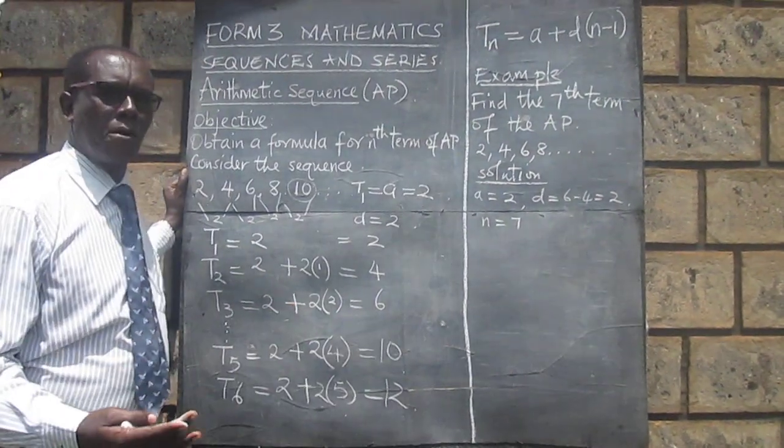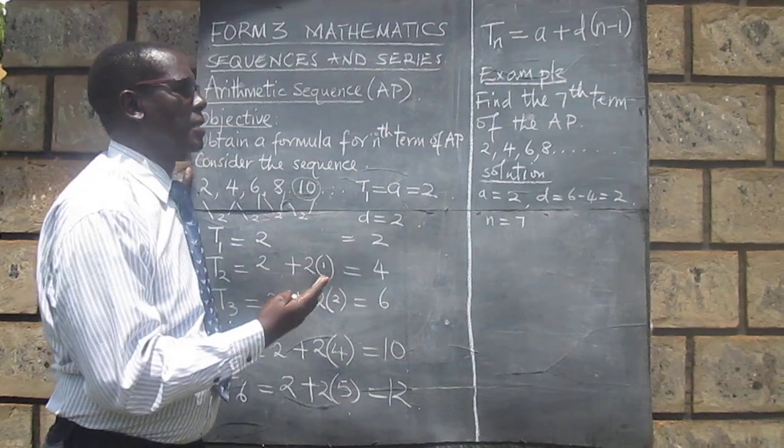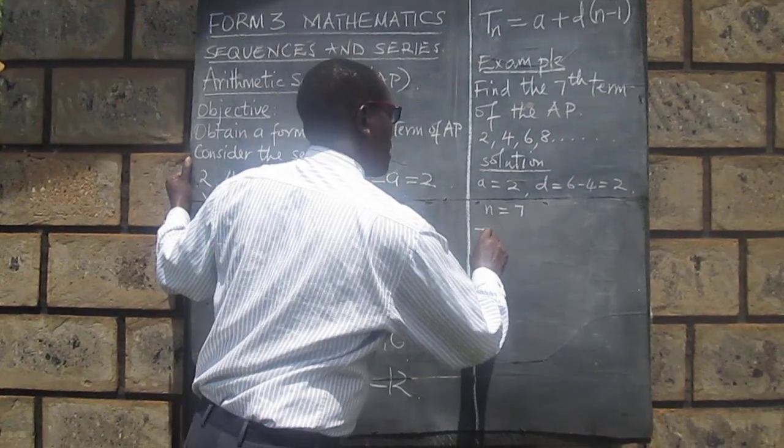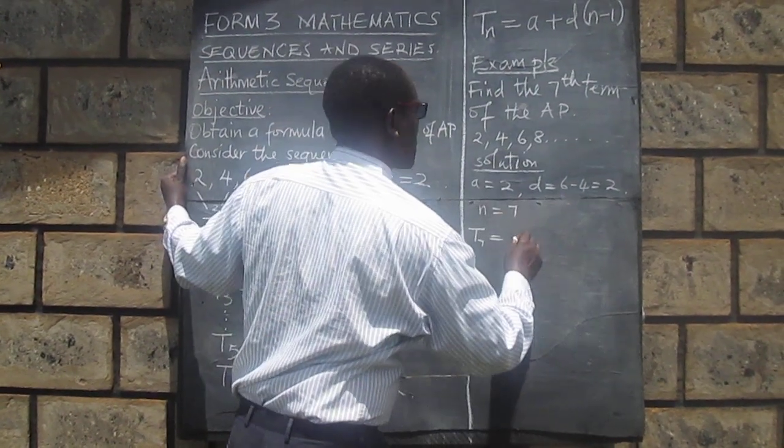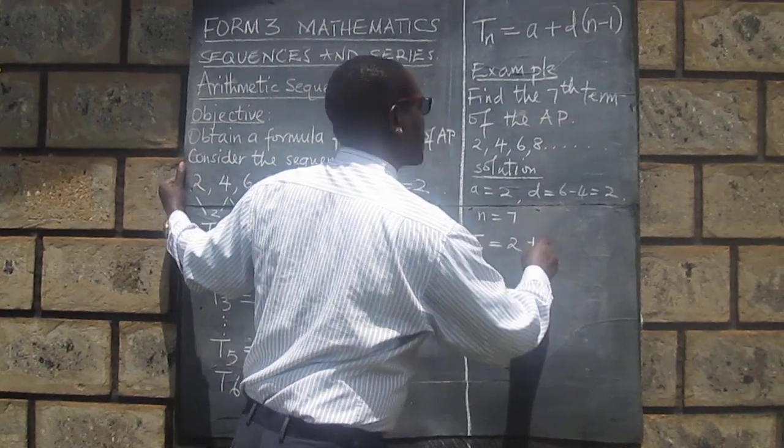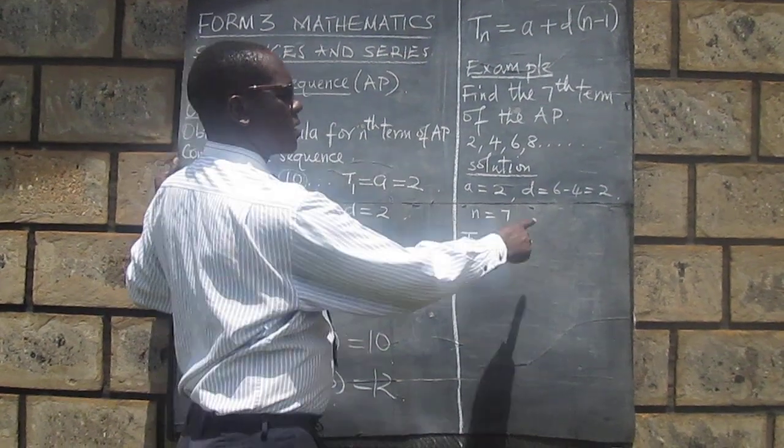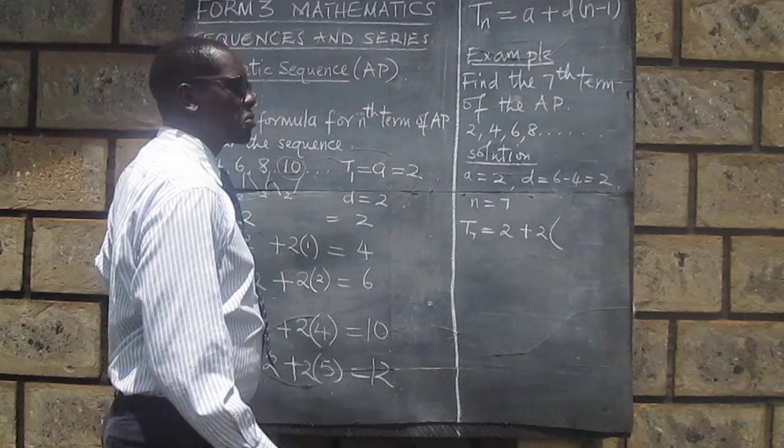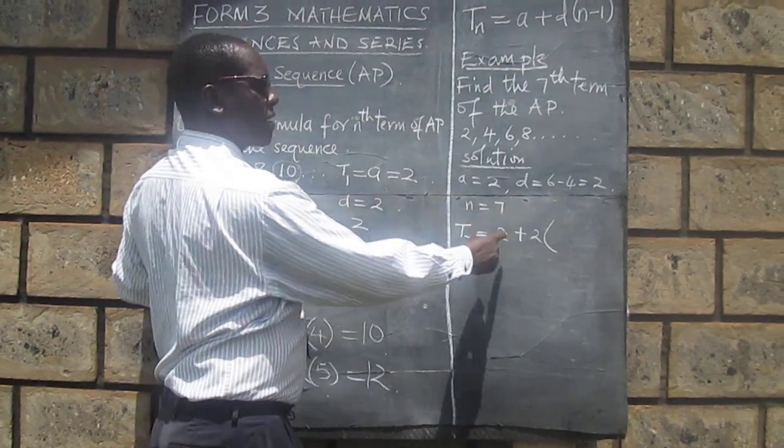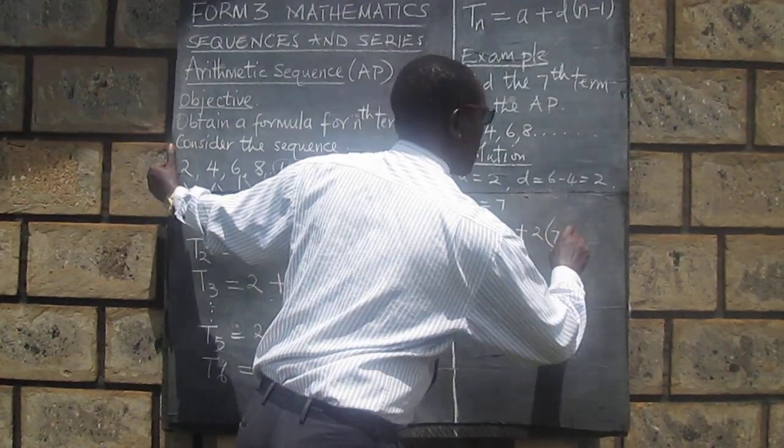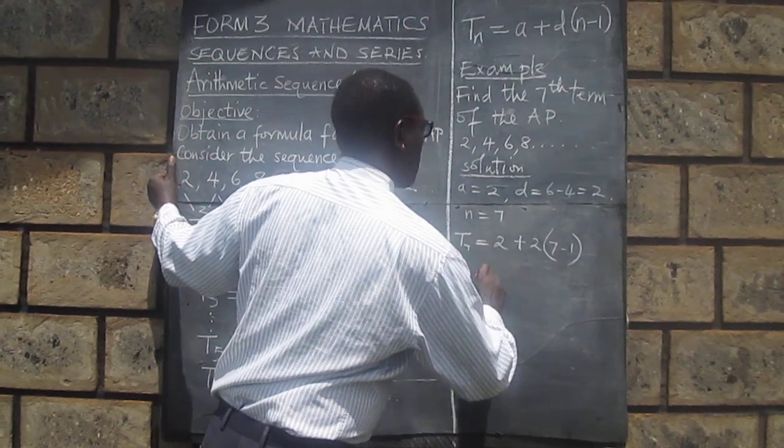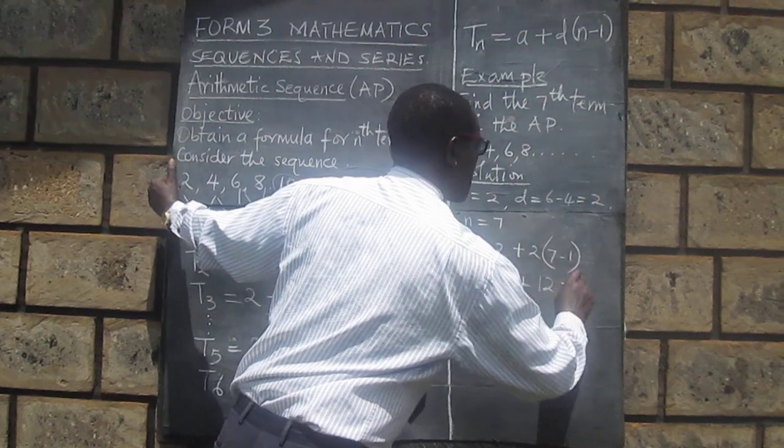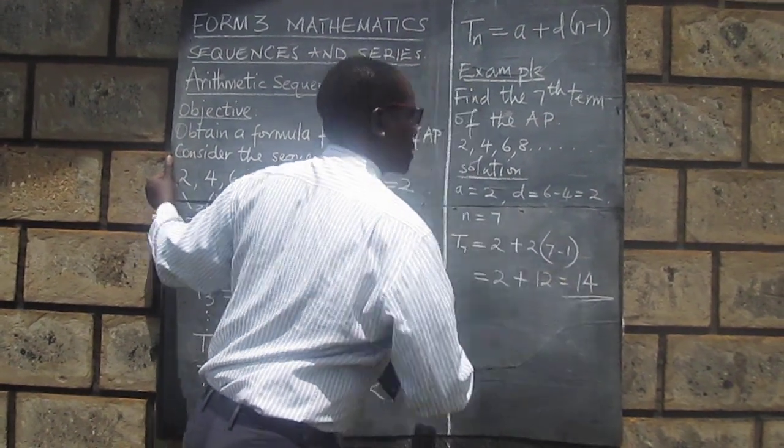And that gives us, therefore, that term number 7 is equal to the first term, which is 2 plus D, the common difference. We have got it as 2 into N minus 1. We are looking for the 7, so 7 minus 1, and therefore, we have it as 2 plus 12, and therefore this gives us 14.